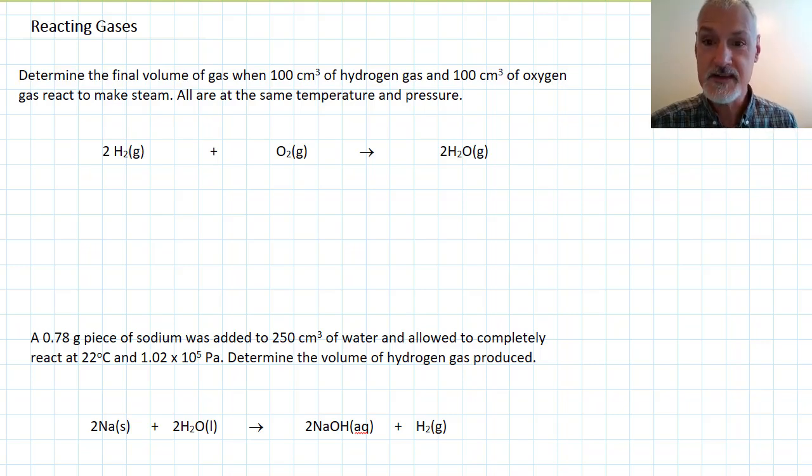This will be our last program on gases, and I want to look at two problems. In my first problem, I've got 100 cubic centimeters of hydrogen and 100 cubic centimeters of oxygen, and I'm going to make steam. The important thing to note in this question is this particular line right here: all of the gases are at the same temperature and pressure. That is going to allow me to take a bit of a shortcut, which I'll show you shortly.